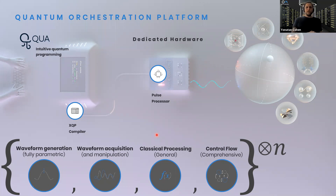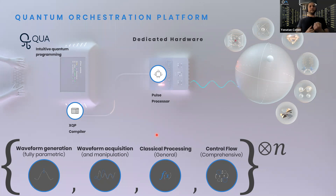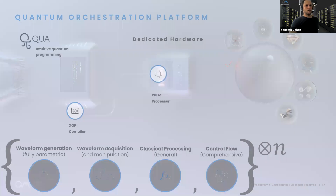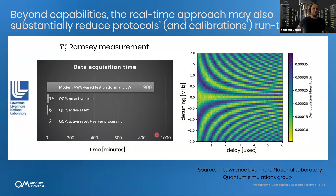There are two fundamental things here. One is this universal pulse-level control language for describing quantum experiments in an intuitive physicist language. The second is building dedicated hardware — a processor architecture capable of executing QUA programs much more efficiently than general hardware, general CPUs, and arbitrary waveform generators, because we are designing the hardware from the basic building blocks.